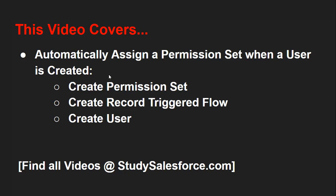So what we need to do to accomplish this: we need to create a permission set. Then we will be creating a record-triggered flow. And then we will create a user so that we can see whether the permission set is assigned automatically to the user or not.